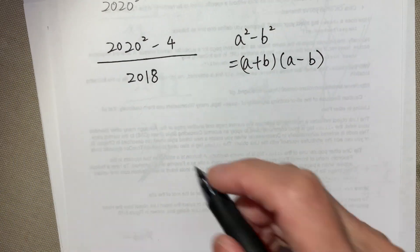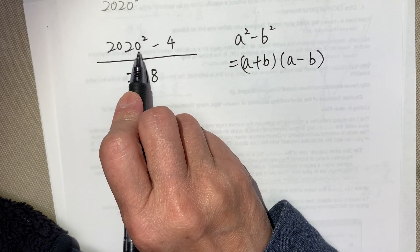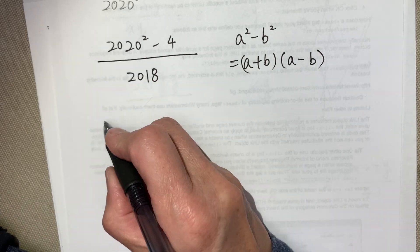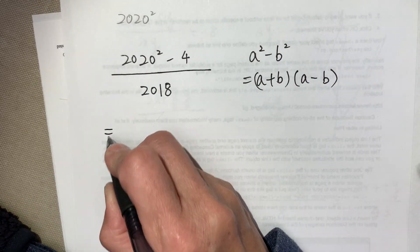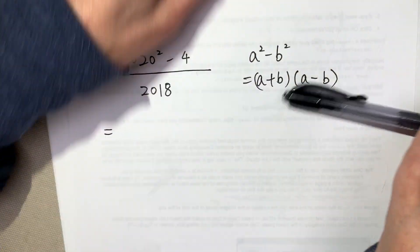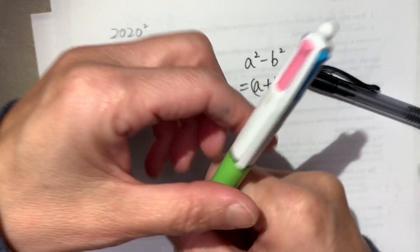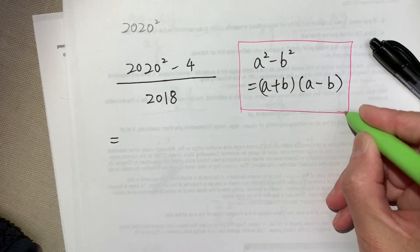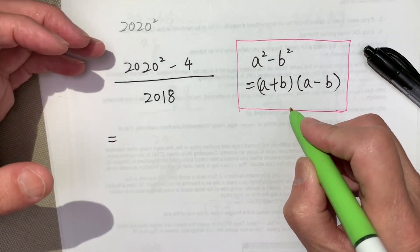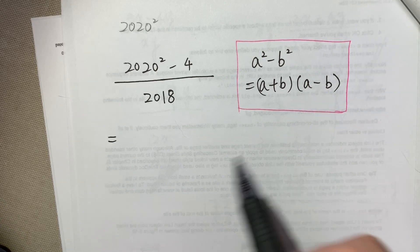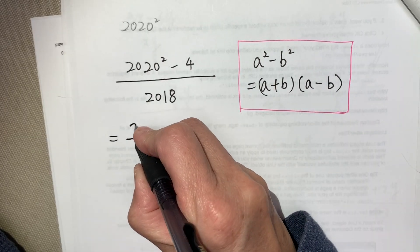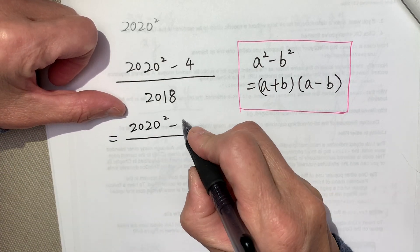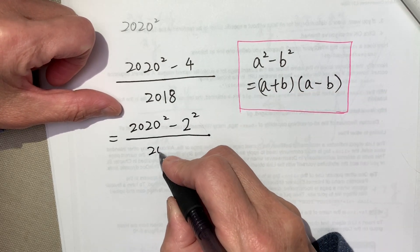Does it make sense? So, 2020 squared minus 2 squared. This formula, we will write it step by step on this side as the reference. I will use another pen to write it so you can easily see it. 2020 squared minus 2 squared over 2018.